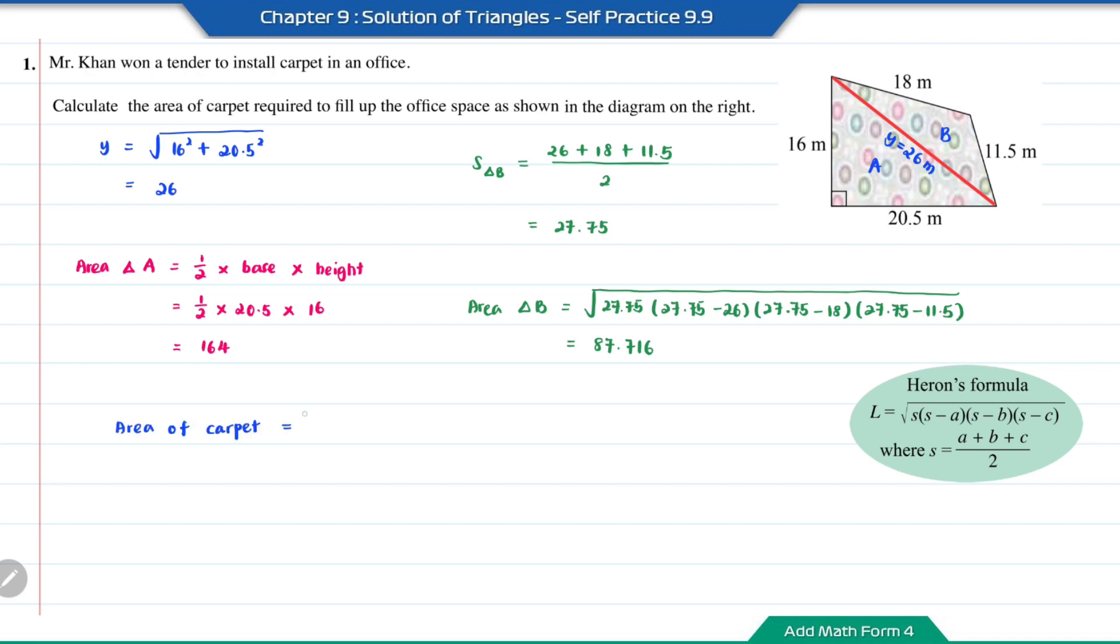Now we can find the total area of the carpet, which is 164 plus 87.716, equals 251.716 square meters.